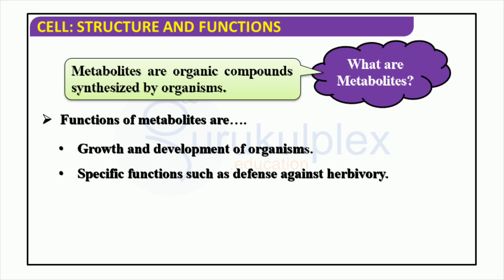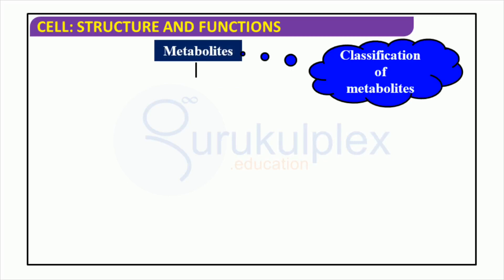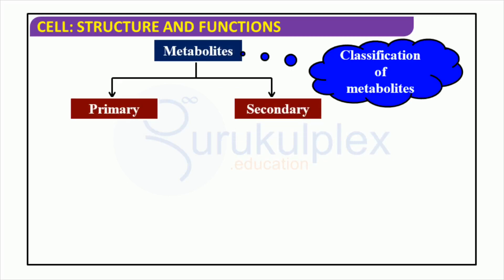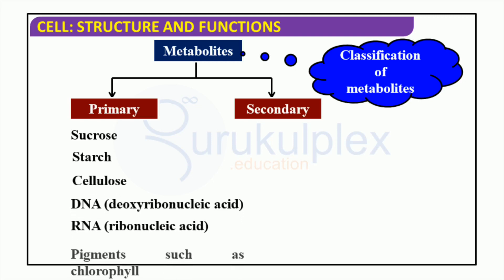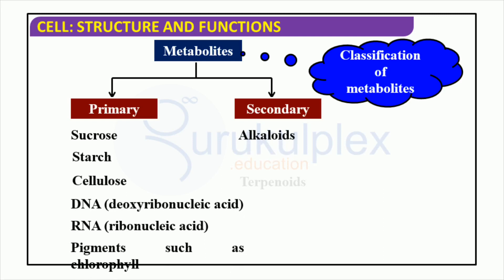Metabolite research allows us to gain a deeper insight into how organisms interact with their environment and the various physiological and biochemical processes at work. Biomolecules are a necessity for all living organisms, consisting of primary and secondary metabolites such as DNA, cellulose, starch, sucrose, phenolic compounds, terpenoids, and alkaloids. Depending on their structure and chemical properties, metabolites provide a variety of functions for the organism.